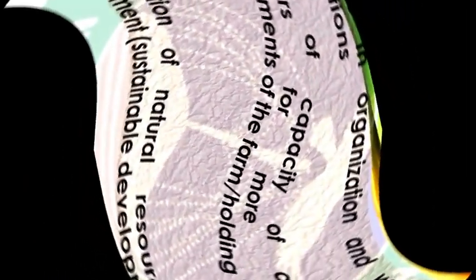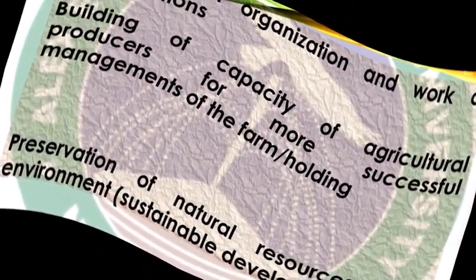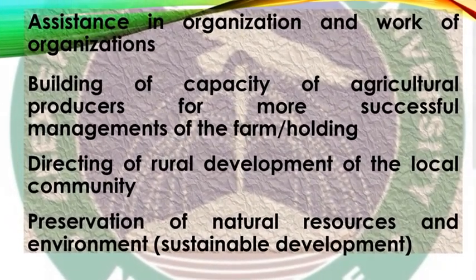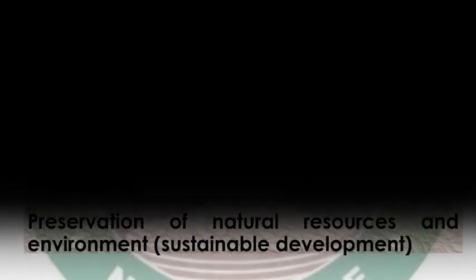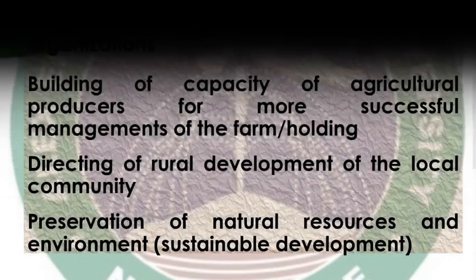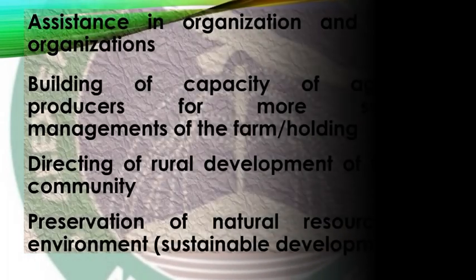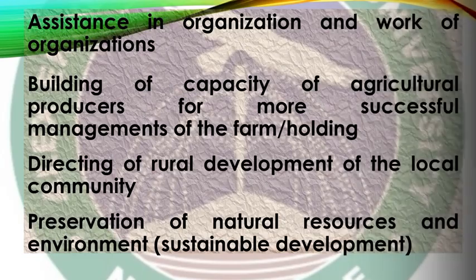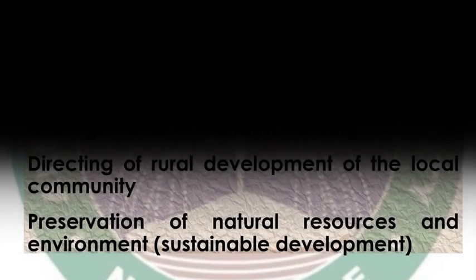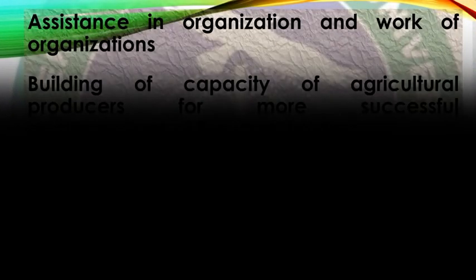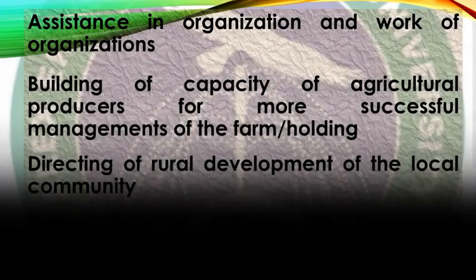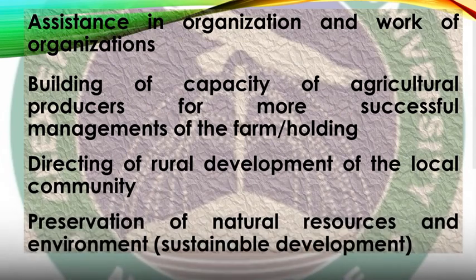It is part of extension's duty to build the capacity of agricultural producers for more successful farm management. Extension also directs rural development of local communities. It would be difficult to have a successful rural development program without effectively engaging in agricultural development, since the majority of rural dwellers are involved in agricultural production, and whatever touches their lives must touch their main source of livelihood.